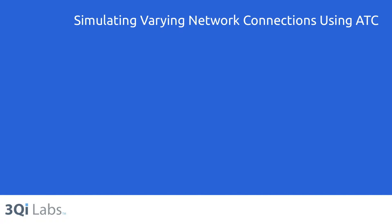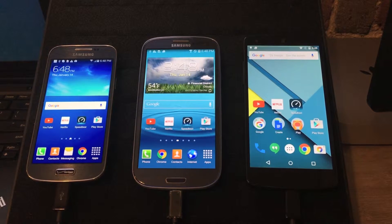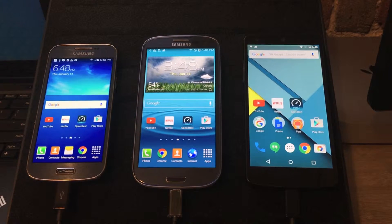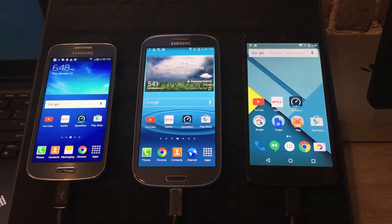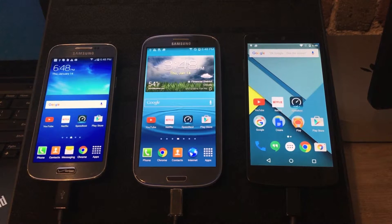This short video demos the capabilities and benefits of Facebook's ATC, Augmented Traffic Control, application to simulate varying network speeds directly on phones connected to an ATC server. Augmented Traffic Control is a tool to simulate network conditions. It allows developers to control the connection that a device has to the internet.